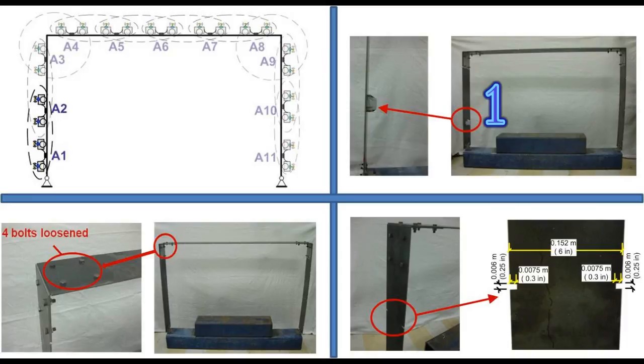The first scenario contains an additional mass block fixed on the left column. The second scenario has four bolts loosened at the upper left corner of the frame. And the third scenario has a small notch introduced to the left column.